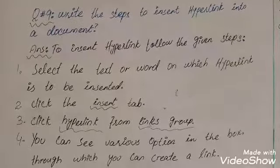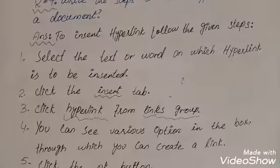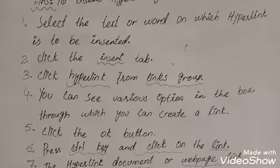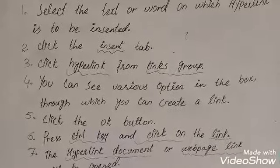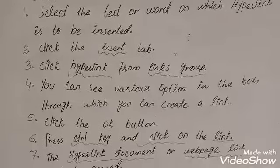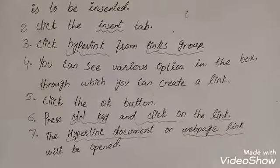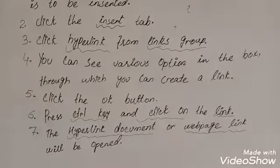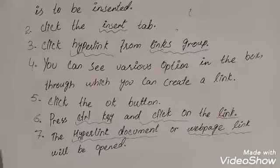Question number nine: write the steps to insert a hyperlink into a document. Answer: to insert a hyperlink, follow the given steps. Step one: select the text or word on which the hyperlink is to be inserted. Step two: click the Insert tab. Step three: click Hyperlink from the Links group. Step four: you can see various options in the dialog box through which you can create a link. Step five: click the OK button. Step six: press the Ctrl key and click on the link. The hyperlink document or web page link will be opened.